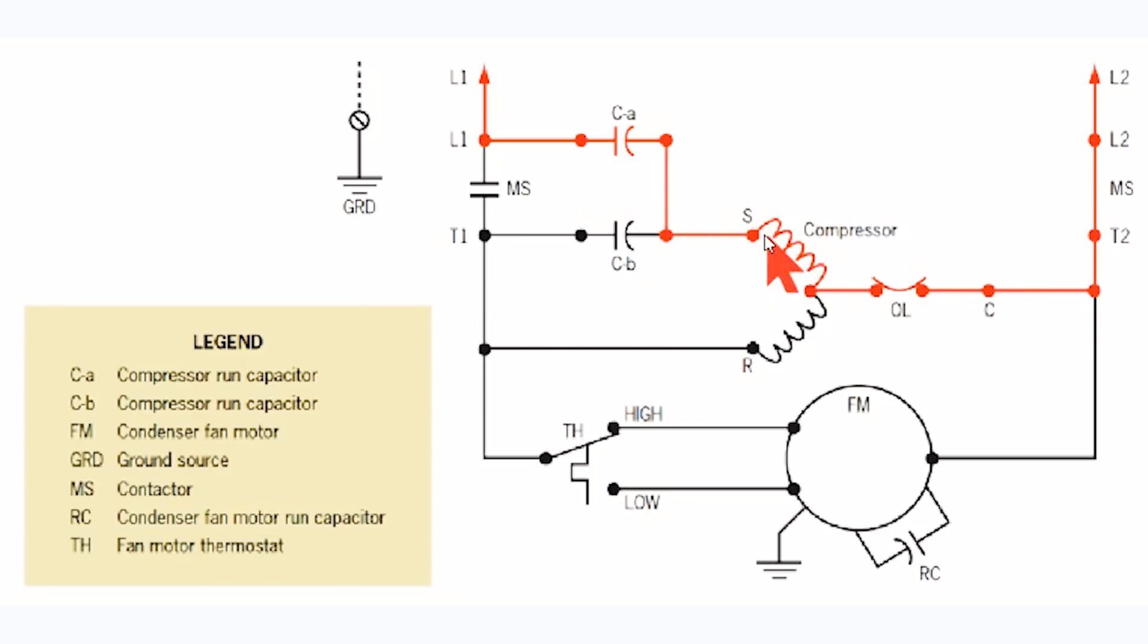It allows a small amount of current to still move through this start winding. What does the start winding become? It becomes a heater. When you have a motor that's running locked rotor and it can't turn, those motor windings become a heater. In this case, the start winding is becoming a heater.